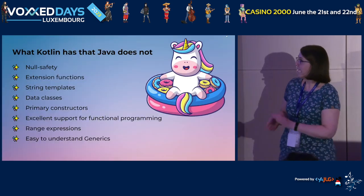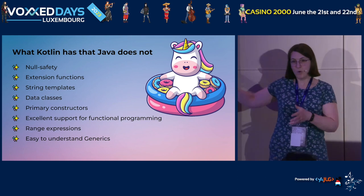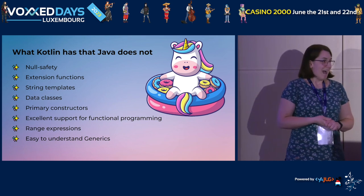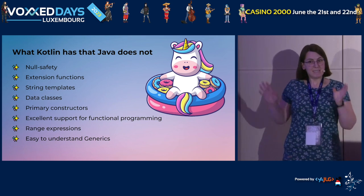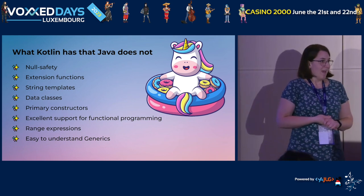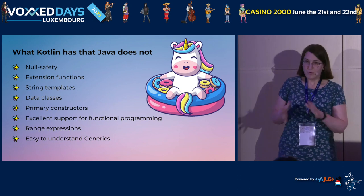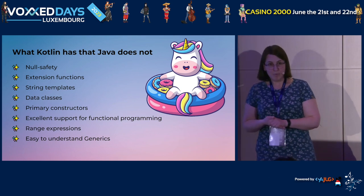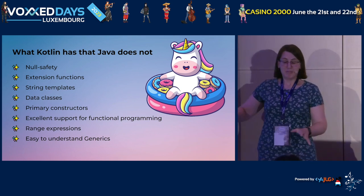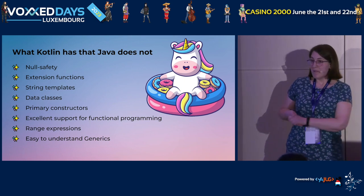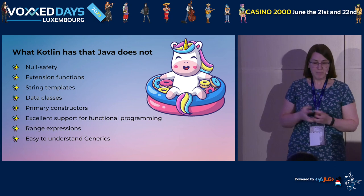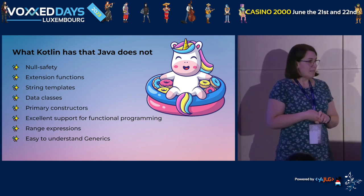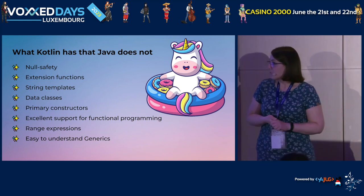So what does Kotlin have that Java does not? The biggest thing I want to mention right now: null safety — the promise of no null pointer exceptions. One of my favorite features is extension functions, which we'll look at. Also string templates, data classes, and really good support for functional programming. The details will follow in just a few minutes.